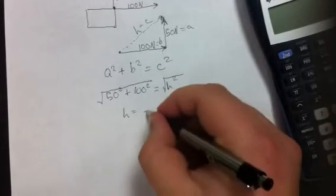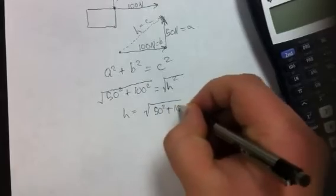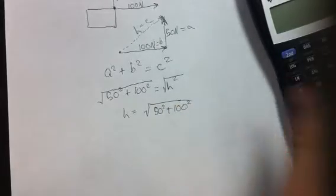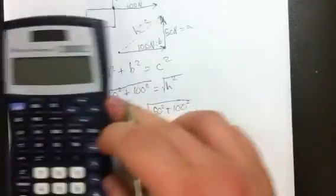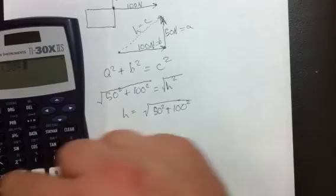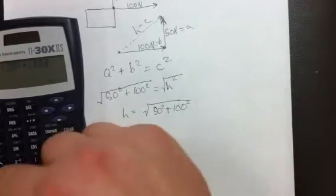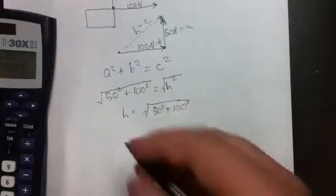Our hypotenuse is equal to the square root of 50 squared plus 100 squared. And on our calculator, we'll do that. It's going to be the square root of 50 squared plus 100 squared. Okay, that gives us the magnitude of our vector.